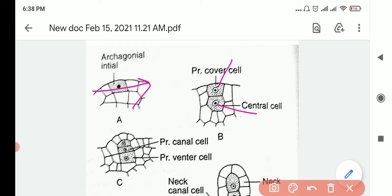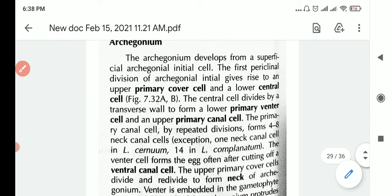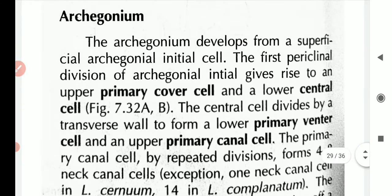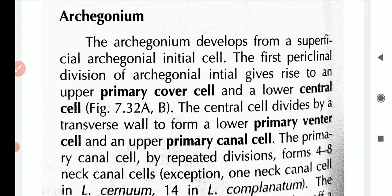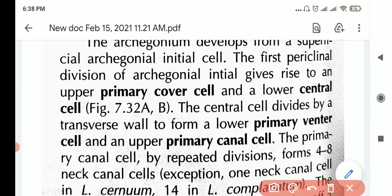The central cell will divide into the primary canal cell and the primary venter cell. Let's look at the writing. The archegonium develops from a superficial archegonial initial cell. The first periclinal division of the archegonial initial gives rise to an upper primary cover cell and a lower central cell.